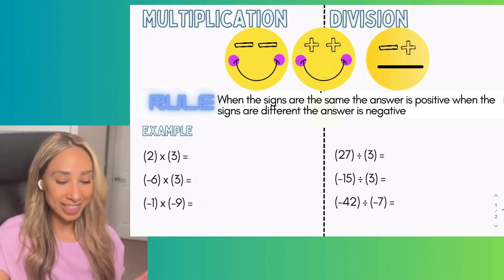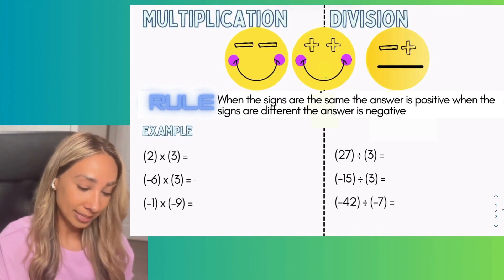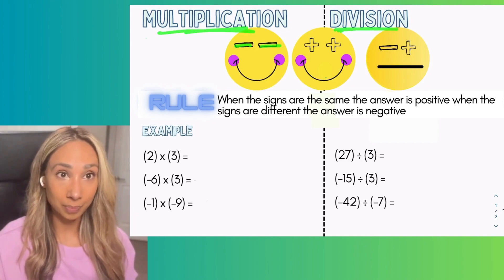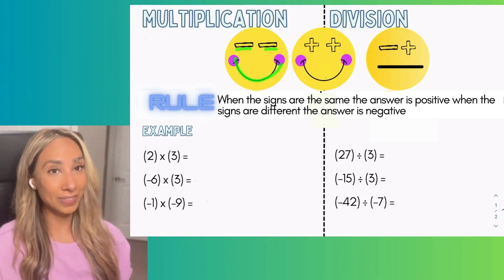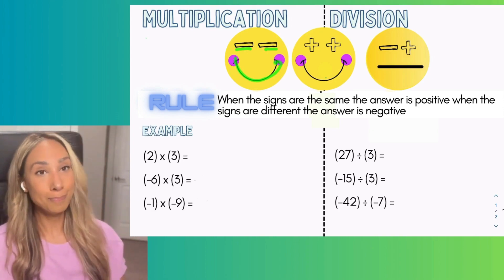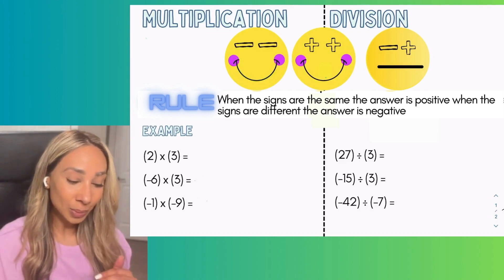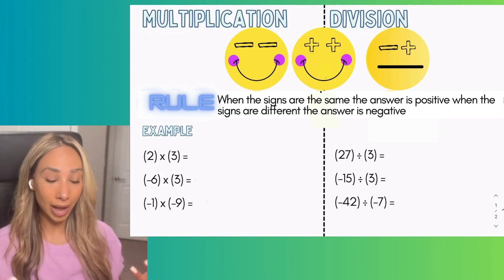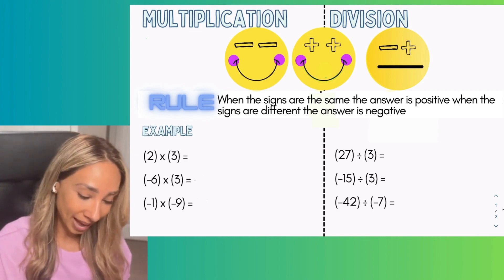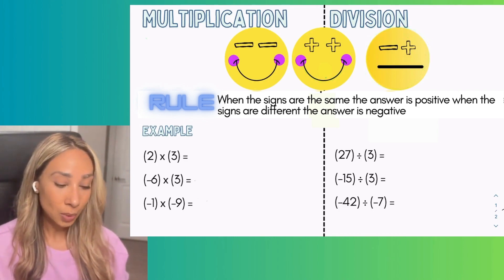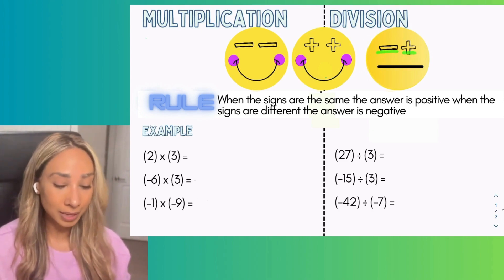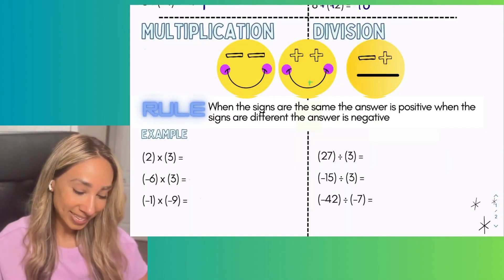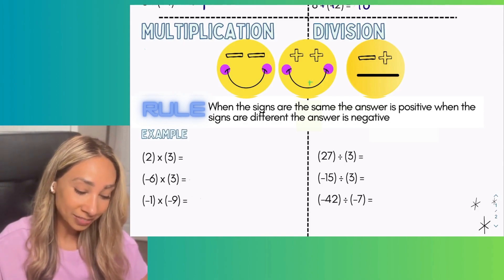For multiplication and division, I like to use these emojis. If both symbols are negative and you multiply or divide them, the answer is positive — the eyes match, the face is happy. If both symbols are positive, the answer is also positive. If the signs are opposite — one negative and one positive — the answer is negative, because the eyes don't match. In other words: when the signs are the same, the answer is positive; when the signs are different, the answer is negative.